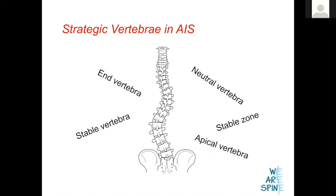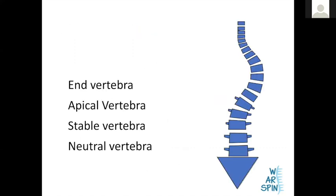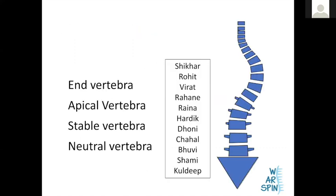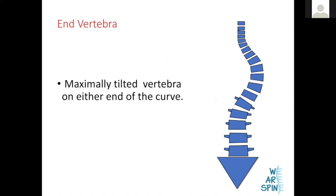Strategic vertebrae are vertebrae that actually make the deformity. Like looking at the Indian cricket team and your eyes going to the big guys — in a curve, the big guys are the end vertebrae, apical vertebrae, stable vertebrae, and neutral vertebrae. These are the vertebrae you need to identify and understand.